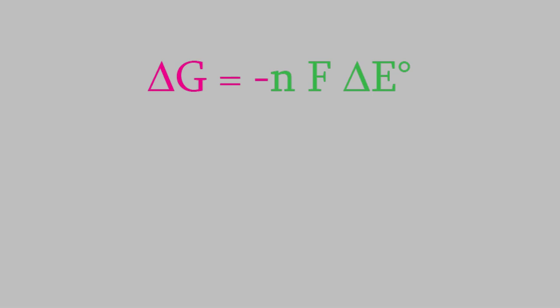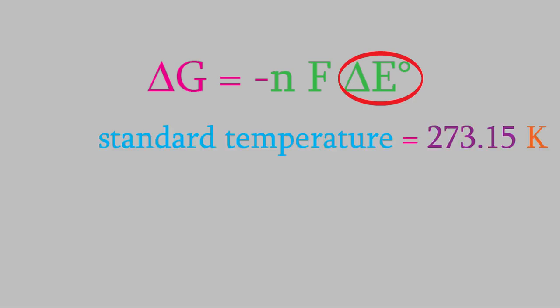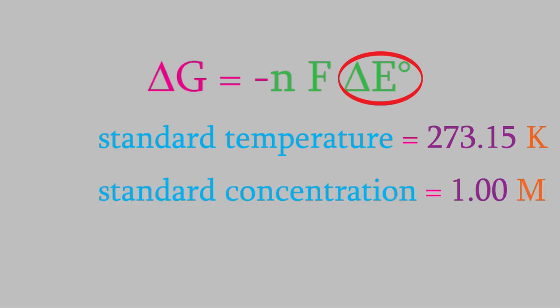One thing you might have noticed about this equation is that the symbol we used for the voltage is delta E zero. Remember, the little zero means that we're at standard temperature. It also means that the concentrations of the solutions in our voltaic cell are at standard concentration, which is one molar.